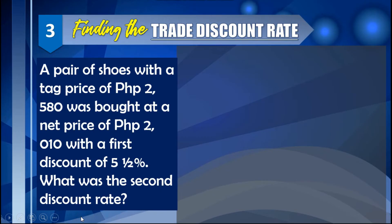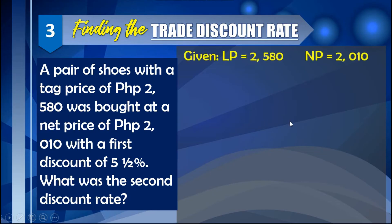Third example: finding the trade discount rate. A pair of shoes with a tag price of 2,580 was sold at a net price of 2,010, with a first discount of 5.5%. What was the second discount rate? Here we have: list price = 2,580, net price = 2,010, and first discount = 5.5%.